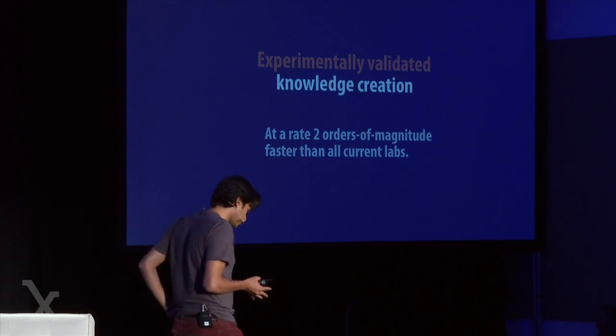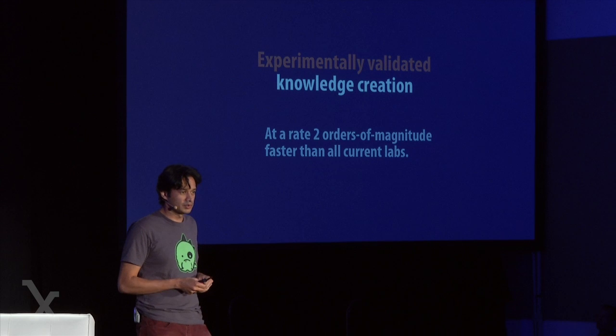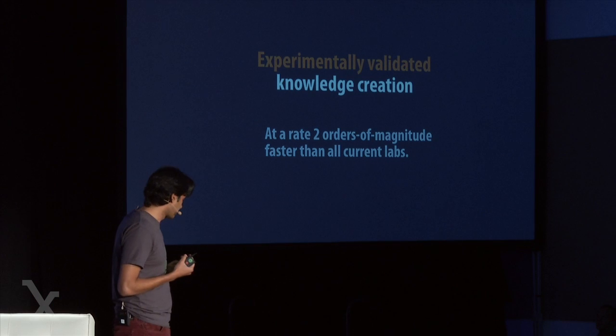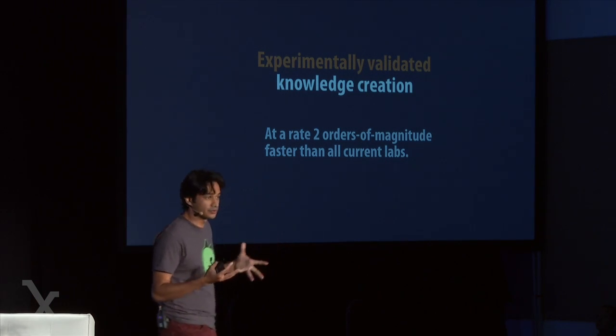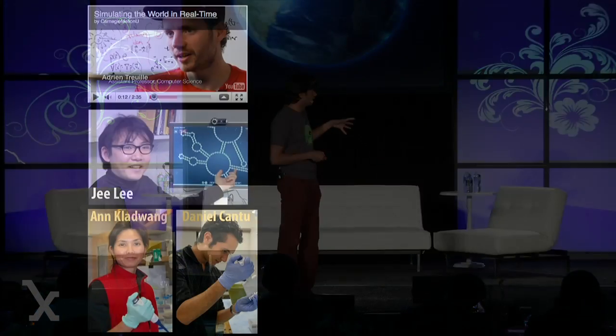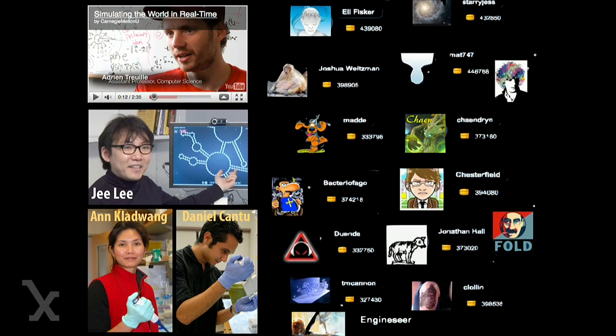A couple of years ago, we dreamed that Eterna could bring the scientific method and high-throughput experimentation to citizen scientists through an online video game. Last year, tens of thousands of people joined the Eterna community, significantly outperforming any previous computational algorithms, and successfully distilling their knowledge into new automated methods that everyone can use. Over the next few years, we hope to dramatically accelerate the experimental throughput of Eterna, and if we can harness the resulting explosion of knowledge through a publication pipeline, I think we're going to see a really new way of doing science. I need to thank my colleagues at Carnegie Mellon and at Stanford, and of course the dedicated members of the Eterna community. Thank you very much.